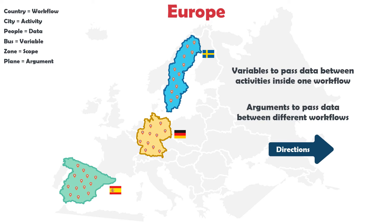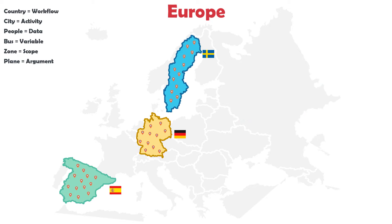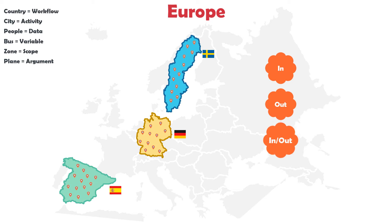For arguments we have directions, but variables don't have directions. What does a direction mean? We have three directions: In, which stands for input; Out, which stands for output; and In/Out, which stands for input and output at the same time.